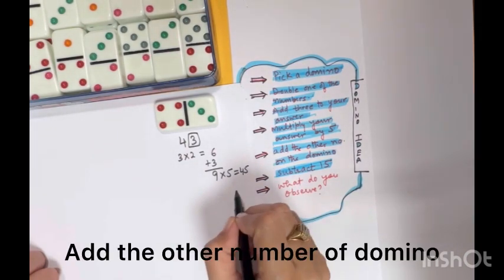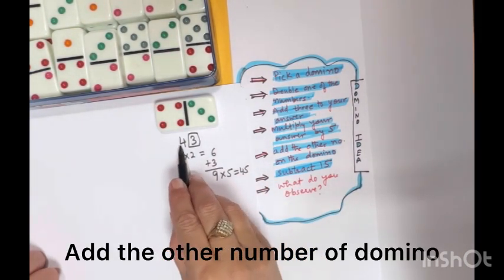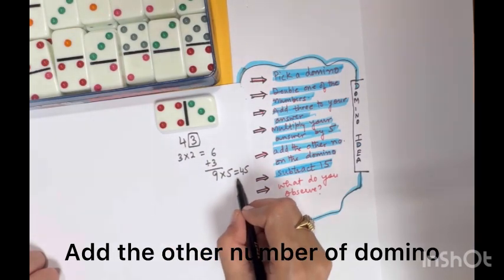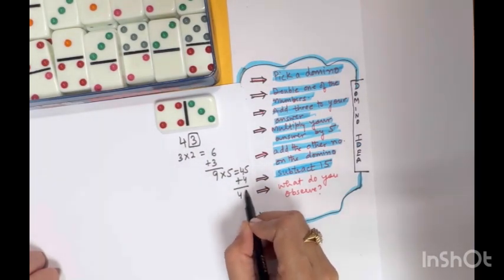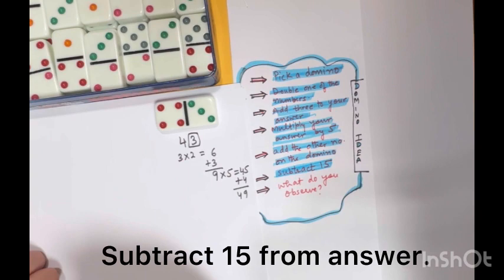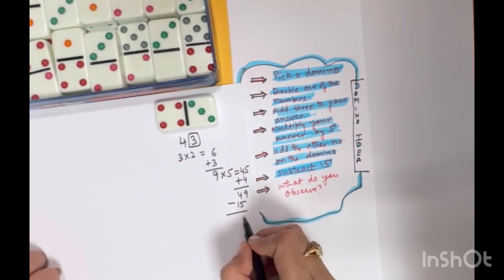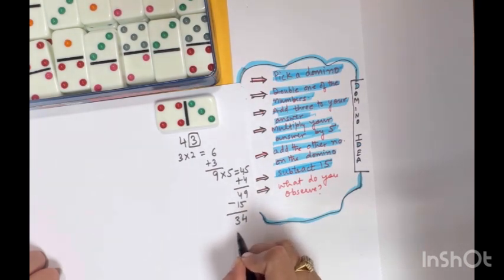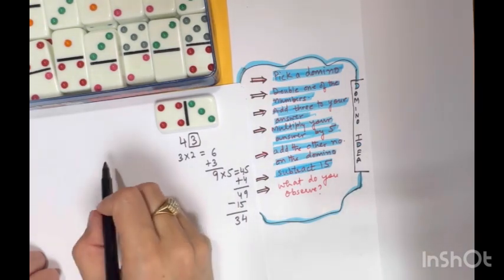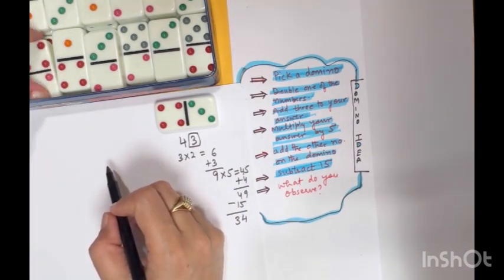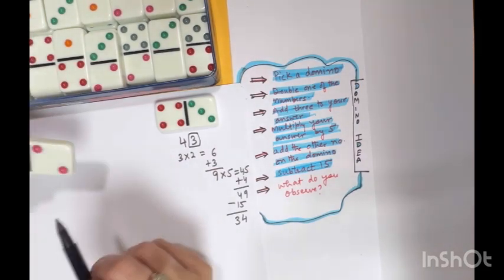Add the other number of the domino, which is 4 here. When we add we get 49. Then subtract 15. See what we get? We get the number 34. Let us pick up another piece and we'll again do the observation.